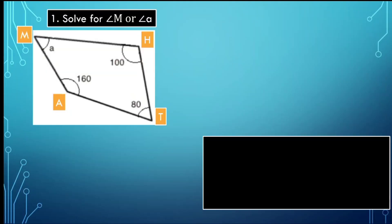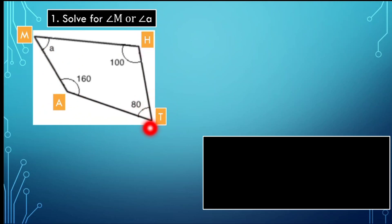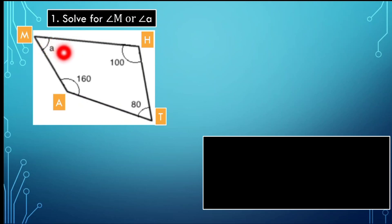Now let's apply that idea in this problem. Let's solve for the measure of angle M in this illustration. We have quadrilateral M, A, T, H — or quadrilateral MATH — and we are asked to find the measure of angle M. With the given angles, we have 160 degrees as the measure of angle A.